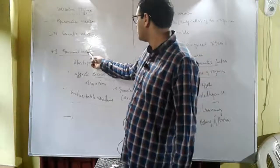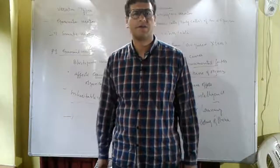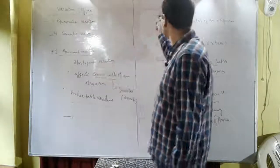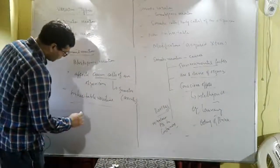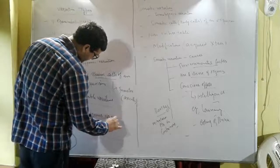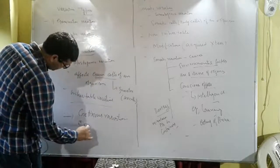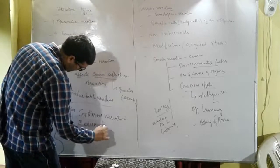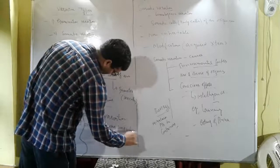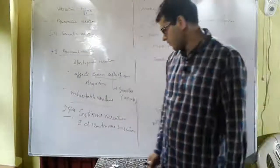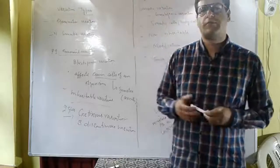To summarize: germinal variation affects the germ cells of the living organism, while somatic variation affects the somatic body cells. Germinal variation is further of two types: continuous variation and discontinuous variation. These will be discussed in the next lecture.